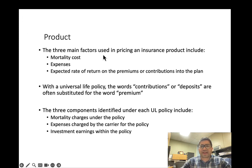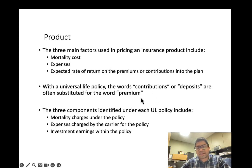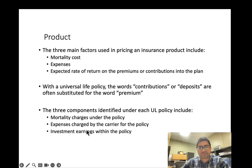The three main factors used in pricing insurance products are: mortality cost — the cost of covering your risk; the expenses the insurance company has; and the expected returns on premiums or contributions into the plan. With universal life, the words 'contribution' or 'deposits' are often substituted for 'premium' because you are also contributing toward an investment. The three main components under each universal life policy are mortality charges, expenses, and investment earnings — all of which keep changing.